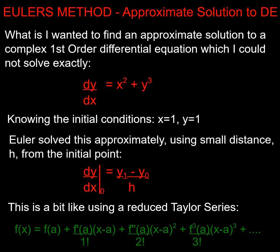What if I wanted to solve a first order differential equation and I can't do it analytically? Let's have a look at an approximate method — this is the method that Euler came up with. He said: I've got initial conditions and I know something about my differential. Here's the formula for my differential, my gradient, and of course I could think of it as that gradient being just my little triangle.